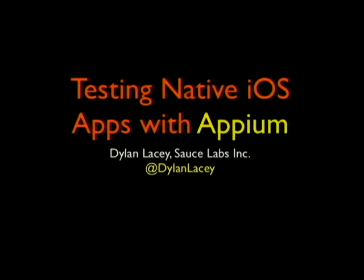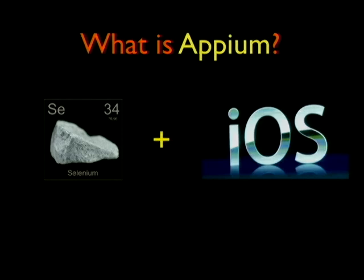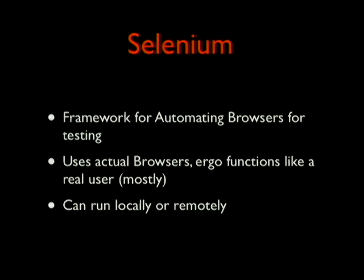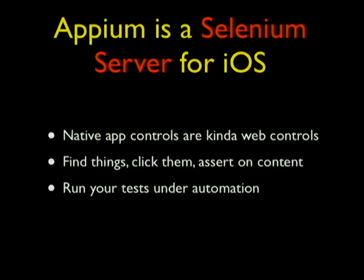Hi, CompIcon. Who wants to be cool? We're not cool — we do Python, we do Ruby. iOS is cool; we want to do iOS, but there's a problem. There's a tool called Appium — Appium is what happens when you combine Selenium, the browser automation tool, with iOS. Selenium is a framework for automating browsers; you can use real browsers like a real user — it functions like a real user and can run locally or remotely. The problem is that iOS isn't a browser. Native app controls are kind of like web controls: you have fields, buttons, you scroll, you click, you slide, and you probably want to automate your tests because doing it manually makes you want to cry.